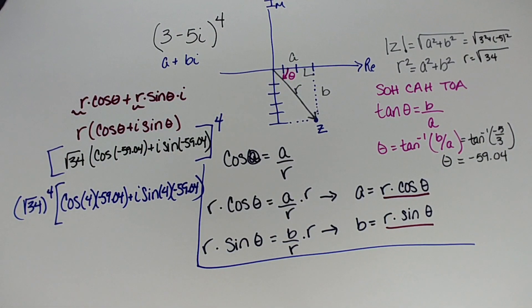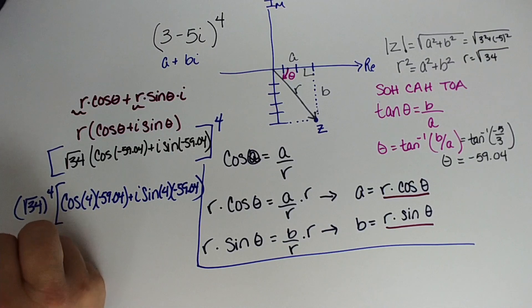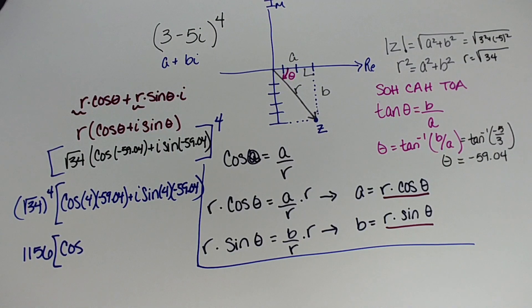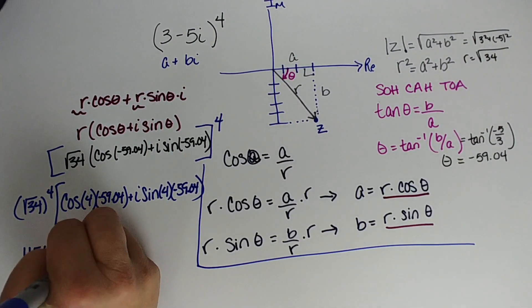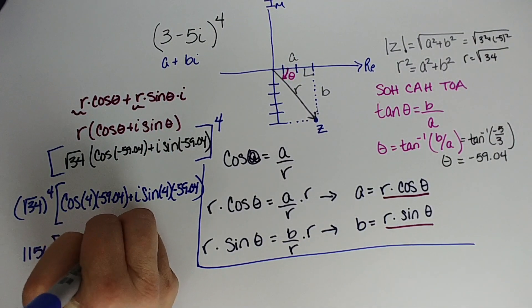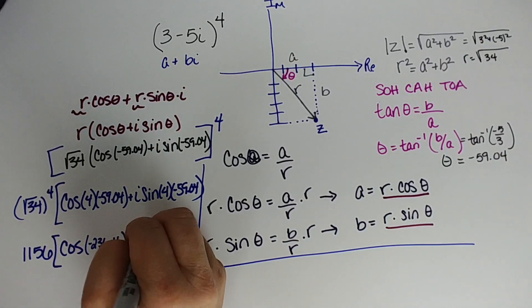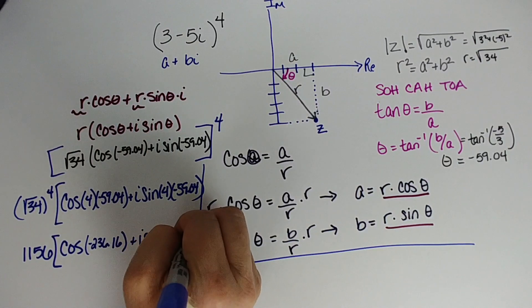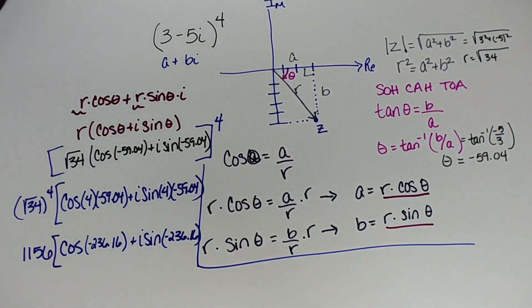We're getting a little smushed here, but the calculator is going to help everything be better now. So square root of 34 raised to the fourth power, when you punch it in, you get 1156, times the cosine, we're going to have a negative, negative 59.04 times four is going to give us negative 236.16 plus i sine of the same thing, negative 236.16.